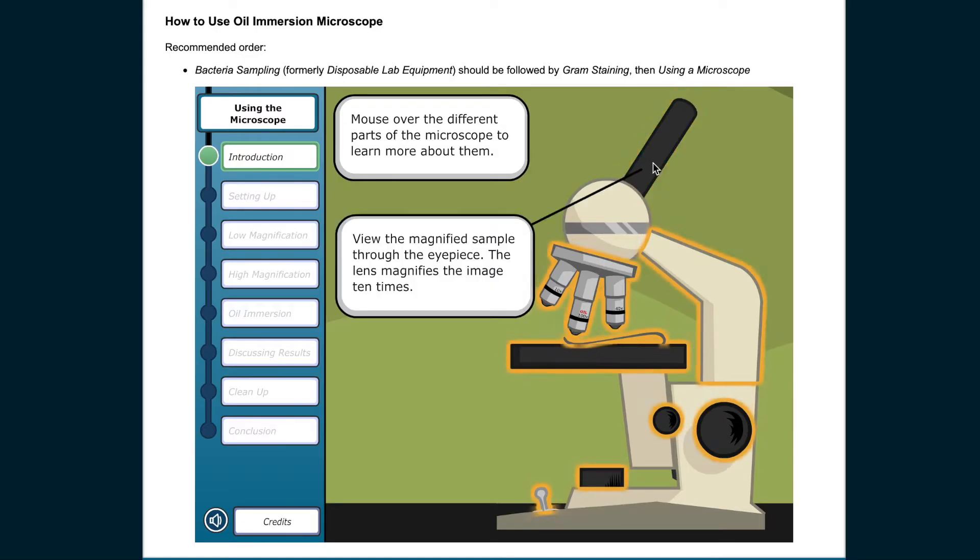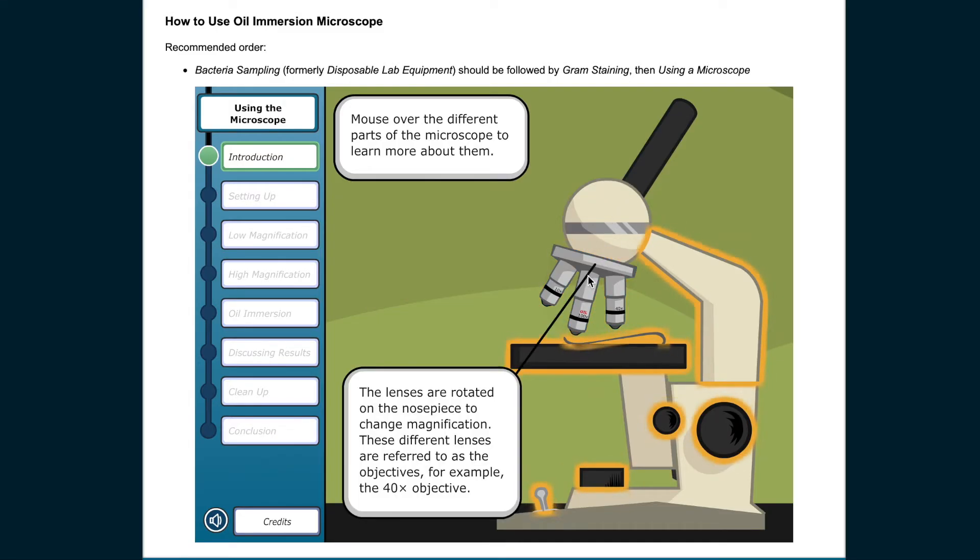Mouse over the different parts of the microscope to learn more about them. View the magnified sample through the eyepiece. The lens magnifies the image 10x. The lenses are rotated on the nose piece to change magnification. These different lenses are referred to as the objectives. For example, the 40x objective.